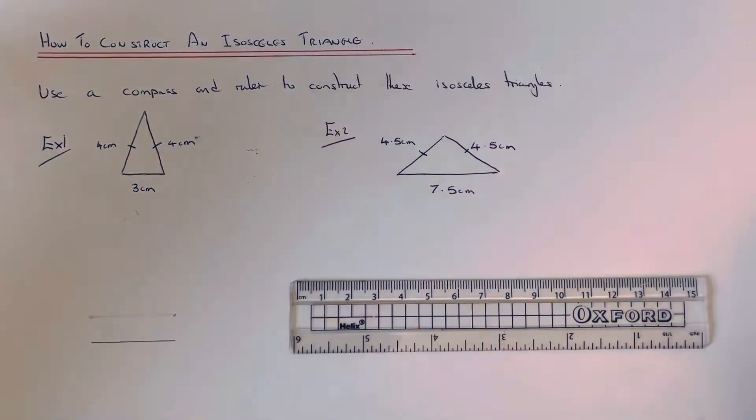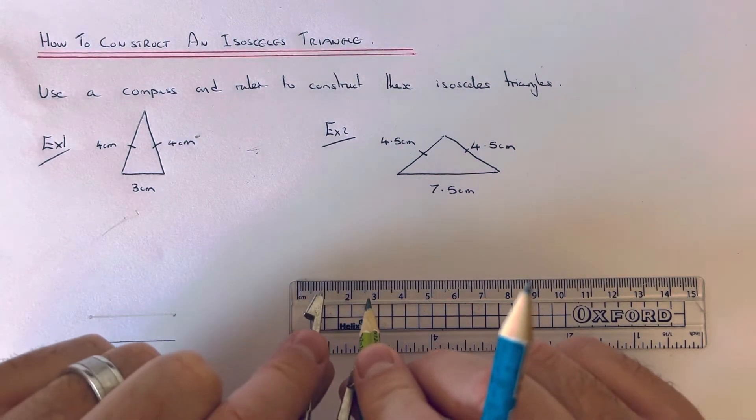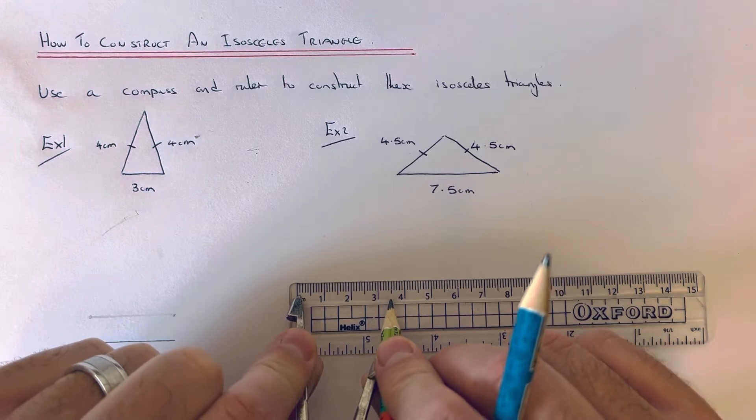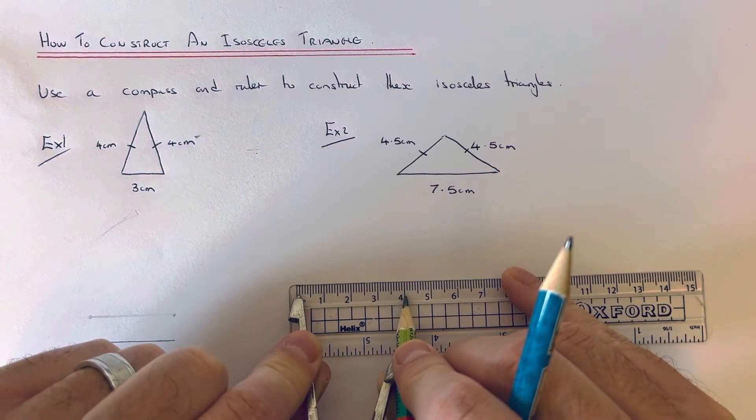Then you'll need to get your compass and open it to 4 centimeters. That is the length of the two other sides of our isosceles triangle.